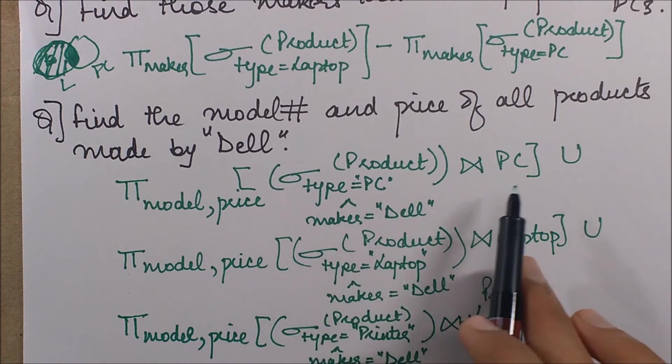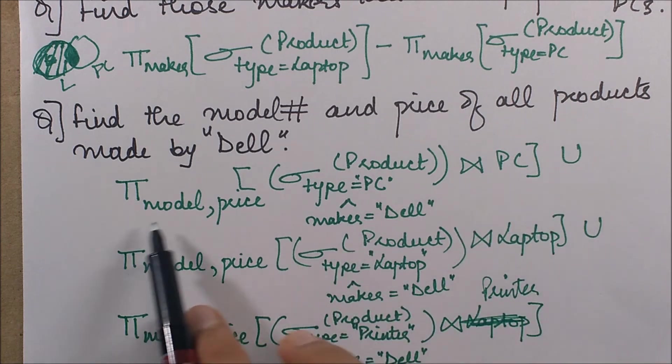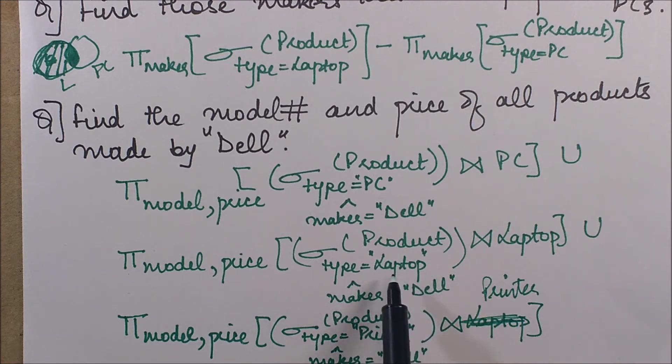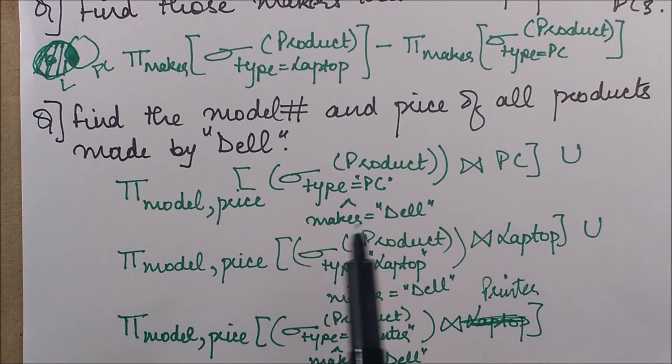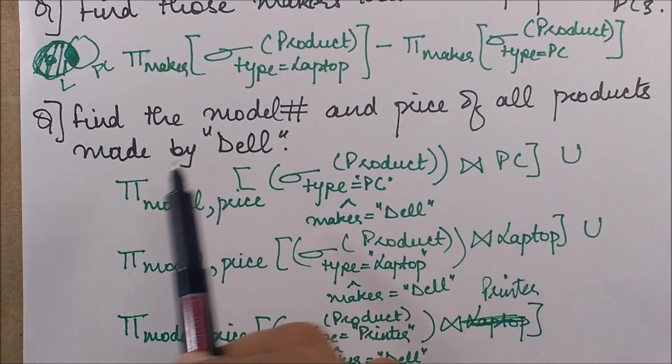And we join it with the PC table and we project the model and price. We do the same thing for the ones with laptop and the ones with printer, and then we union these tuples. So finally, we get the entire collection of the products made by Dell.